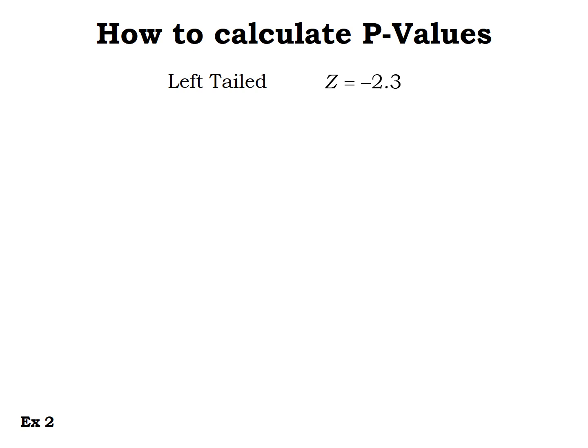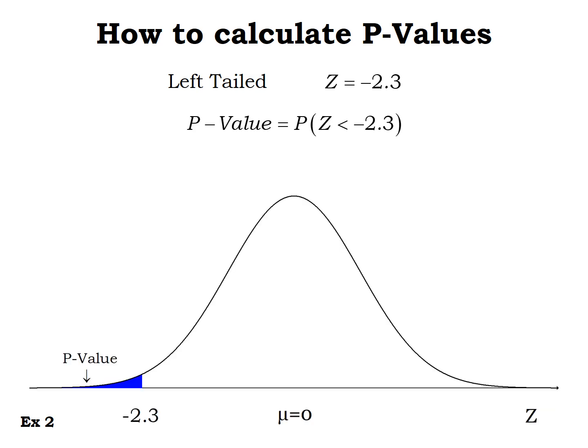Now with a negative z-score of negative 2.3 and a left-tailed test, the p-value is the probability of getting a z-score smaller than negative 2.3. We find the area to the left of negative 2.3 using the normal CDF, and the p-value is approximately 0.0107.